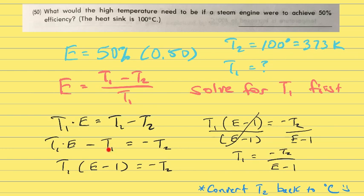But now I want to factor out the T1 from both of these quantities. So when I factor that out, remember reverse distributive property, I get T1 times this quantity, E minus 1, which is efficiency minus 1, equals negative T2. Now I can divide both sides by E minus 1. Over here that will cancel out, and voila, I have solved for T1. T1 equals negative T2 over E minus 1.